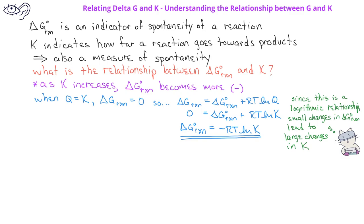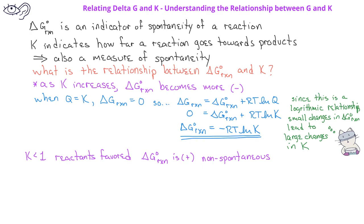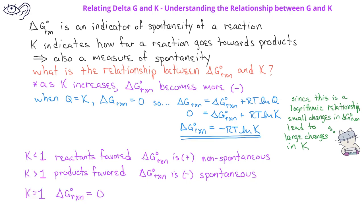When K is less than 1, the reactants are favored in the equilibrium, and at the same time the standard free energy change for the reaction is positive, which indicates a non-spontaneous process. When the equilibrium constant has a value greater than 1, that indicates that the products are favored, and the standard free energy change for the reaction is negative, indicating a spontaneous reaction. When the equilibrium constant has a value of 1, the standard free energy change for the reaction is zero, which indicates that the system is at equilibrium under standard conditions.